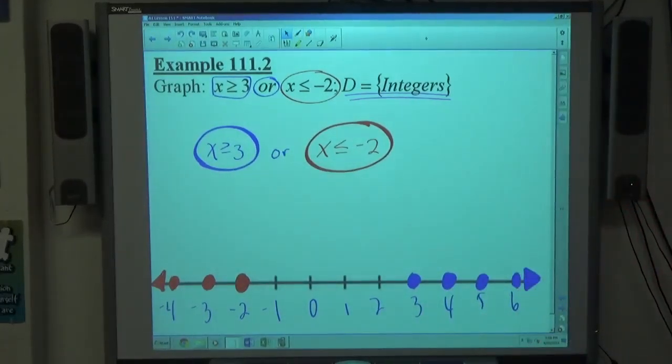So x less than or equal to negative 2 means I have a closed circle at negative 2. Because it equals negative 2, and negative 2 is an integer. And less than goes to the left, so I'm going to fill in negative 3, negative 4, only graphing integers. And I make the arrow bold to show that as I continue on that direction forever and ever and ever, every dot gets marked also. So the only integers that are false would be negative 1, 0, 1, and 2.